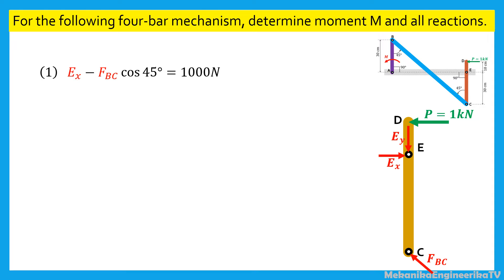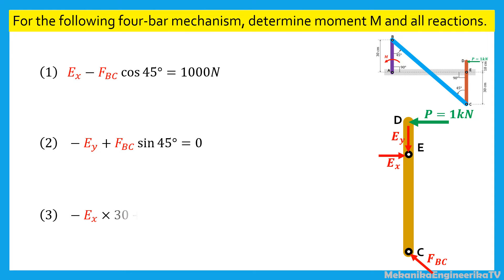The equilibrium of forces along the vertical direction gives: minus EY plus FBC times sine 45 degrees is equal to zero. The moment equilibrium equation around the point C gives: minus EX times 30, plus 1000 times 40, is equal to zero.